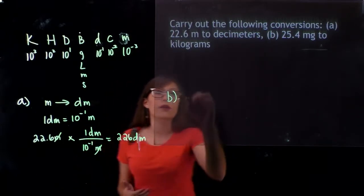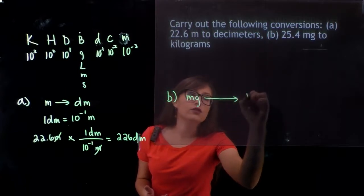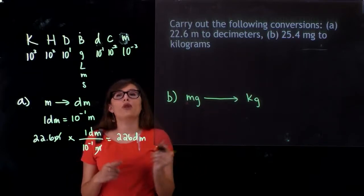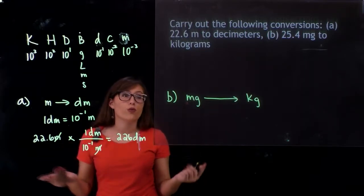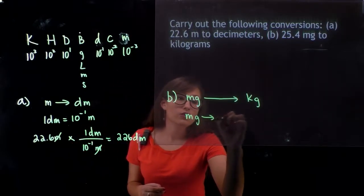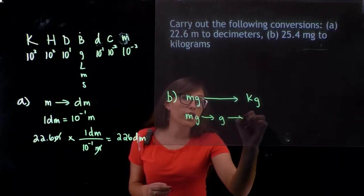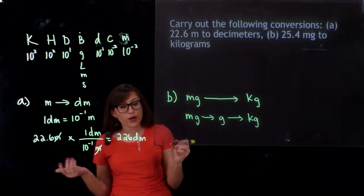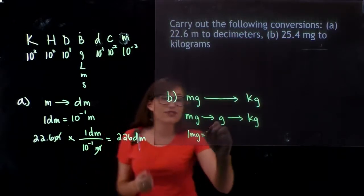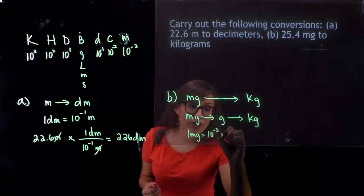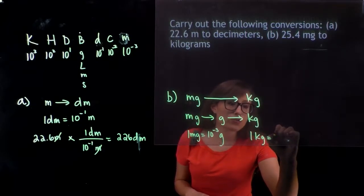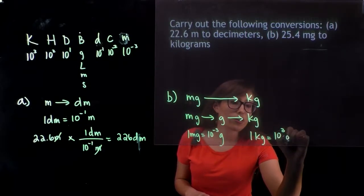Part B, we're going from milligrams all the way to kilograms. However, in order to go from milligrams to kilograms, we do have to convert to the base unit, grams. So we're going to do a multi-step conversion — from milligrams to grams, and then from grams to kilograms. We know 1 milligram is equal to 10 to the negative 3rd grams, and 1 kilogram is equal to 10 to the 3rd grams.